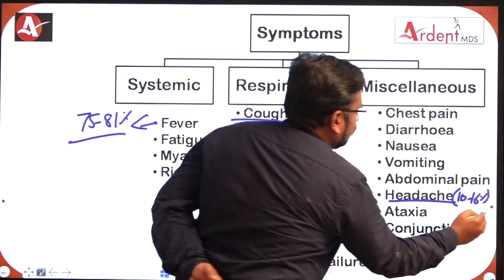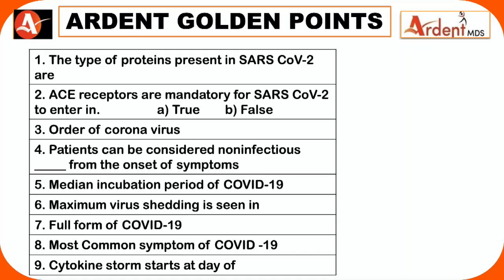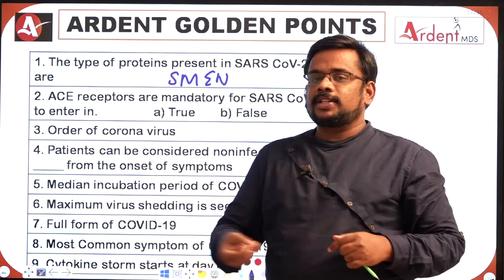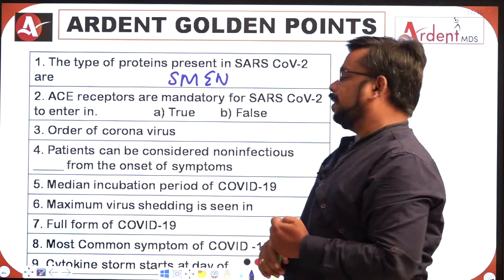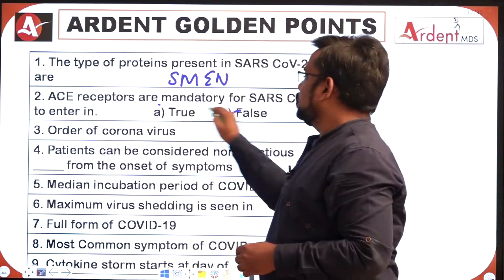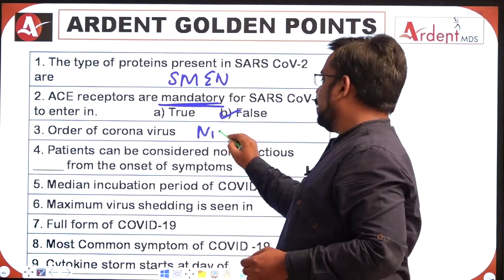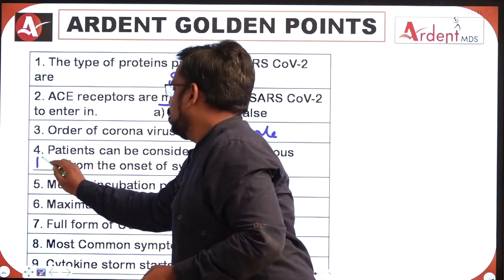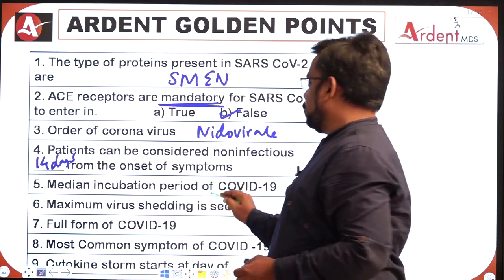Coming to important MCQ and golden points related to COVID: proteins present in SARS-CoV-2 — remember SMEN: Spike protein, Membrane protein, Envelope protein, Nucleocapsid protein. Are ACE2 receptors mandatory for SARS-CoV-2 to enter? Many students think true — but ACE2 receptors only facilitate entry; they are not mandatory. Answer is false. The order of coronavirus is Nidovirales. A patient can be considered non-infectious 14 days from the onset of symptoms.